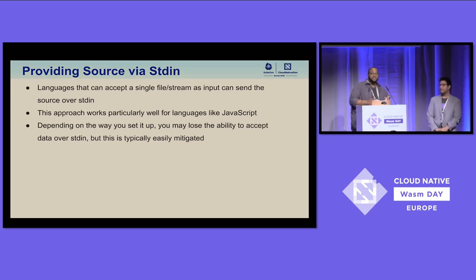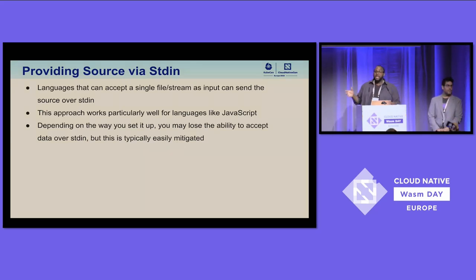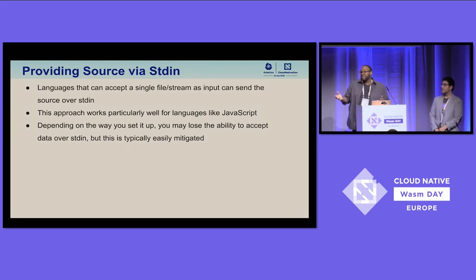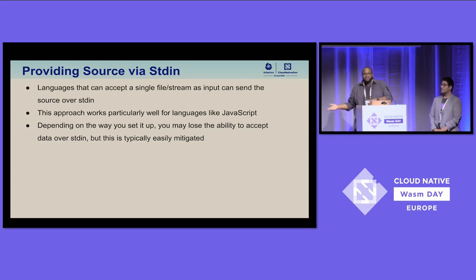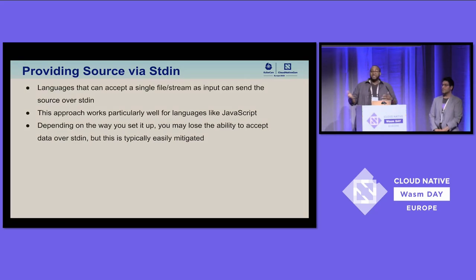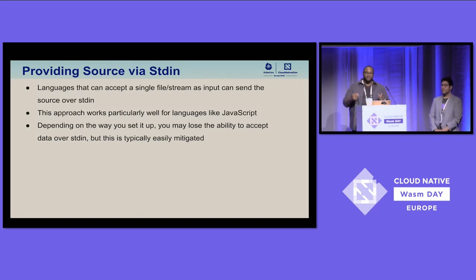The other major approach is via standard in. If you don't want to deal with files at all, you just stream source code in. This works really well with JavaScript, since all JavaScript bundlers do anyway is concatenate code together — you can stream it in over standard in, the interpreter reads and runs it. One downside is that if you need standard in for the user's code as well, that could be a problem, but there are easy solutions like using a different file descriptor.